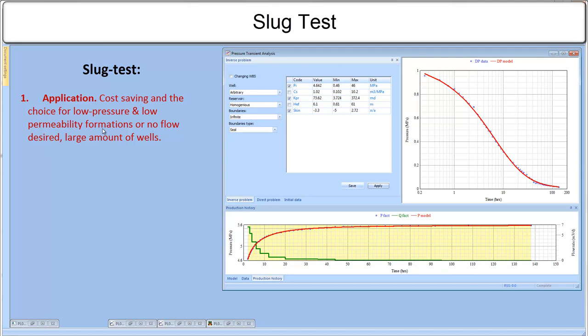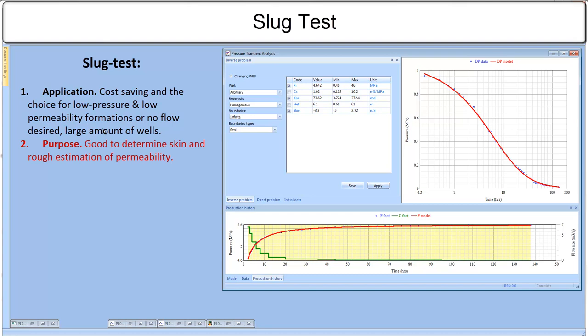The test is good to determine skin, reservoir pressure and rough estimation of permeability. The next, duration of the test. The slug-test recommended to continue until the liquid level or down-hole pressure is stabilized at initial pressure PI.